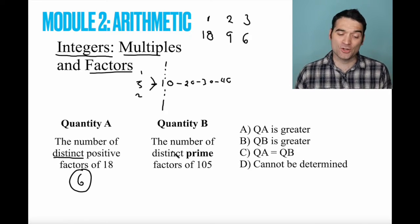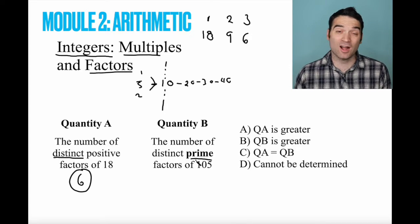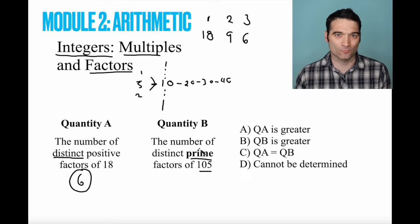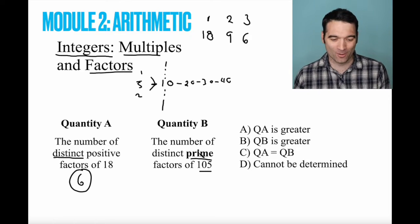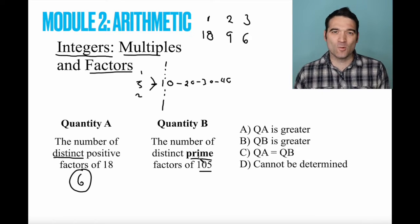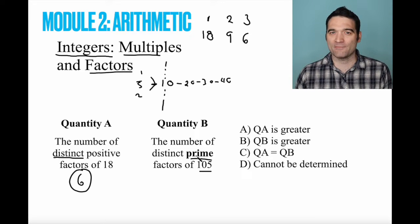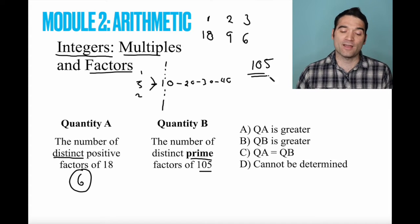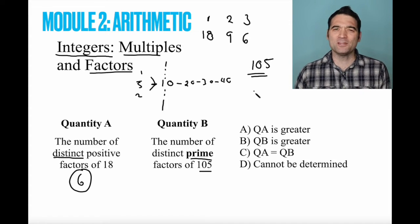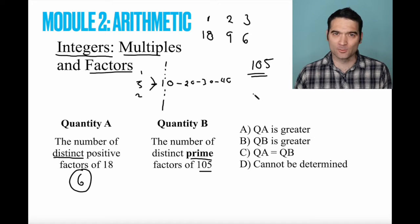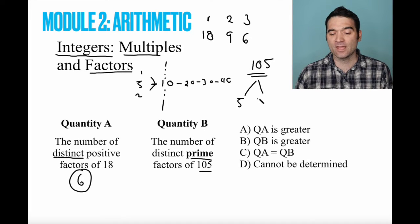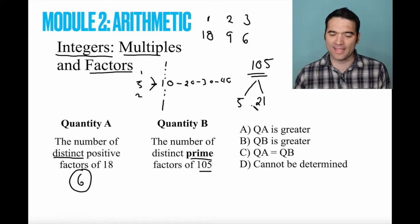All right, quantity B wants to know the number of distinct prime factors of 105. Now, we talked about prime numbers. Remember what prime numbers are and what they aren't. Now, the best way to break down a number into its prime factorization is with a factor tree. Let me show you what I mean here. So here's 105, right? I'm going to divide 105 by anything, literally anything. It doesn't matter as long as it comes out to an integer. So why don't I divide this by 5 and 21, again, using my calculator.